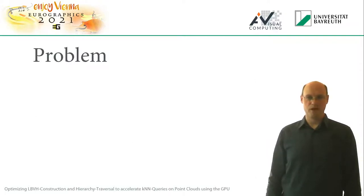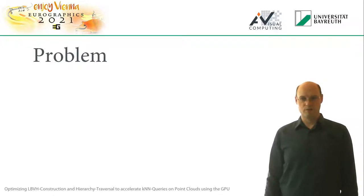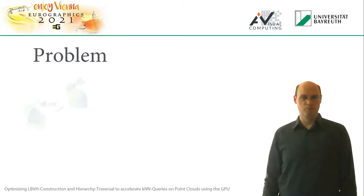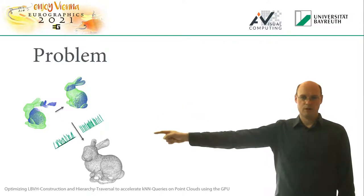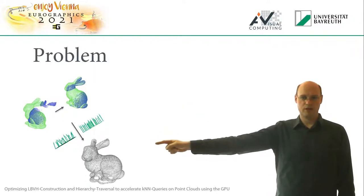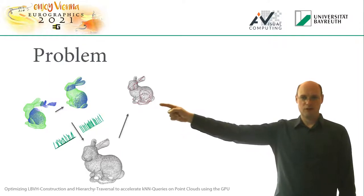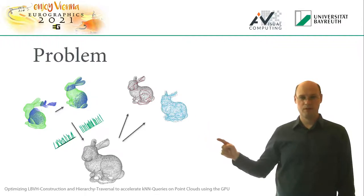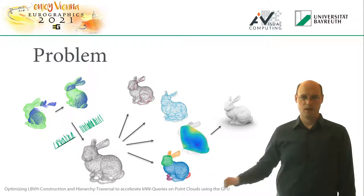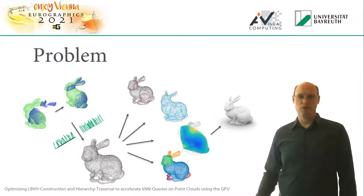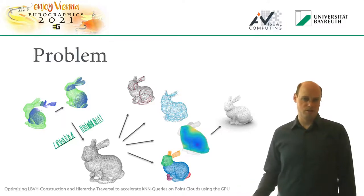KNN queries occur in many areas of point cloud processing and are often dominating the runtime of the algorithms. A few examples include point alignment using the ICP algorithm, removal of noise and globally correct orientation, computing paths on point clouds, feature mapping, reconstruction and segmentation. In our case, we were looking for an efficient solution for massive KNN graph construction of a point cloud for consistent normal orientation.